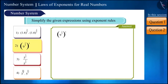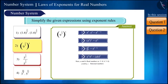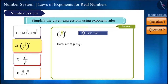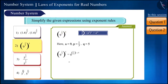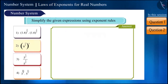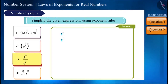The second number is quite easy to simplify. Here we use this exponential rule where a = 9, p = 1/3, and q = 5. This gives 9 raised to the power 5/3.